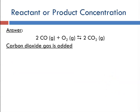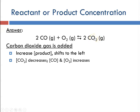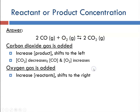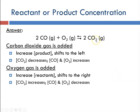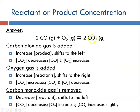If carbon dioxide gas is added — that is a product — the increase in product will result in a shift to the left to reduce that stress. That means the concentration of carbon dioxide would decrease and carbon monoxide and oxygen would increase. If we add oxygen, which is a reactant, the equilibrium shifts to the right, so the concentration of carbon dioxide would increase and carbon monoxide and oxygen would decrease. If we remove carbon monoxide, which is a reactant, we would expect it to shift to the left to form more reactants, so the concentration of carbon dioxide would decrease and carbon monoxide and oxygen would increase.